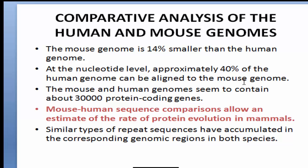If we align the nucleotide sequence, 40% are totally the same — and 40% is a large, huge number of comparison. That is the main reason we use the mouse as an experimental animal for the human genome project. If we apply an experiment to the mouse, we can determine the effect on the human body. For that reason, the mouse is used in genome project experiments for comparison to the human genome.